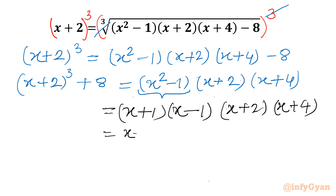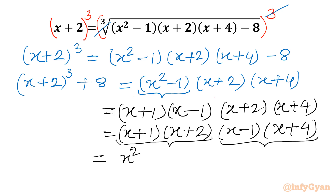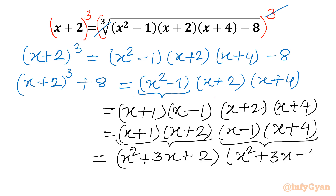I will group (x plus 1)(x plus 2) together, and separately (x minus 1)(x plus 4). Expanding the first pair: x² plus 2x plus x plus 2 gives x² plus 3x plus 2. Expanding the second pair: x² plus 4x minus x minus 4 gives x² plus 3x minus 4. The left-hand side remains (x plus 2)³ plus 8.